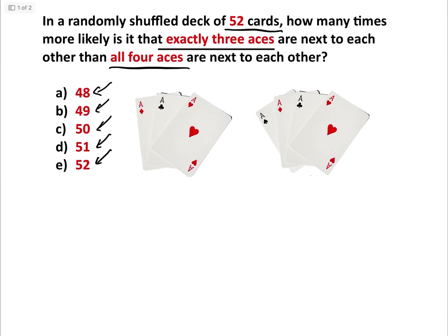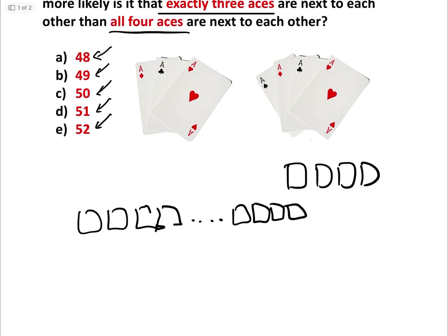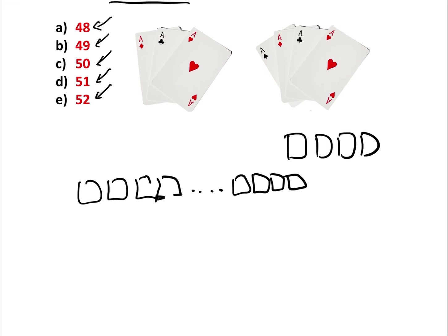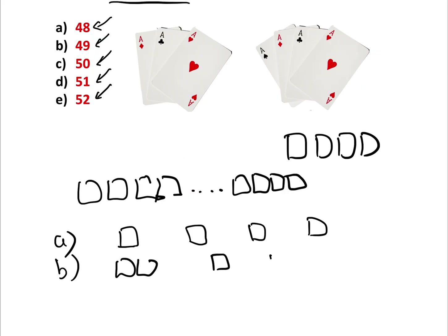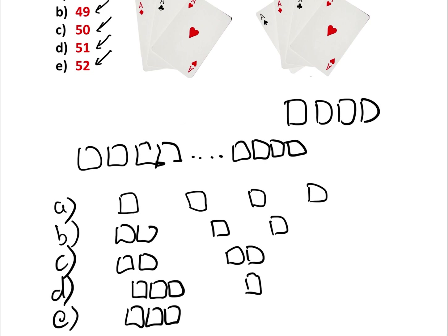We have four aces and 48 other cards. The possible ways that four aces can be arranged in that deck are: A) four aces separate from each other — none of them next to each other; B) two aces next to each other and two separate; C) two aces next to each other and the other two aces next to each other; D) three aces next to each other and one separate; and E) all four aces next to each other.